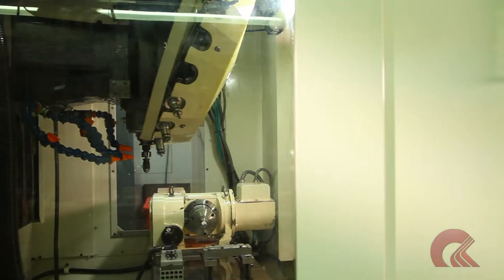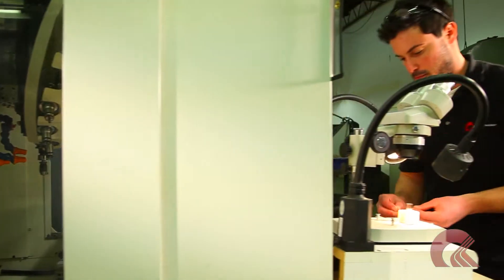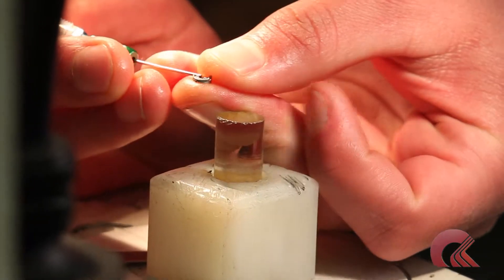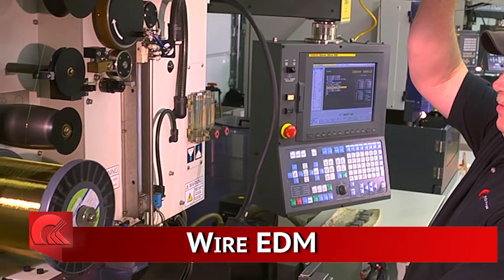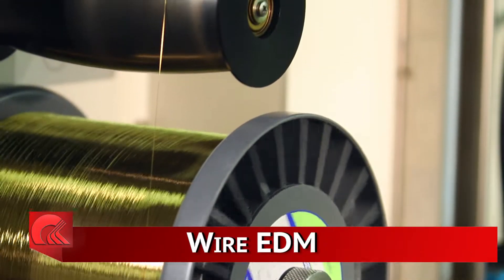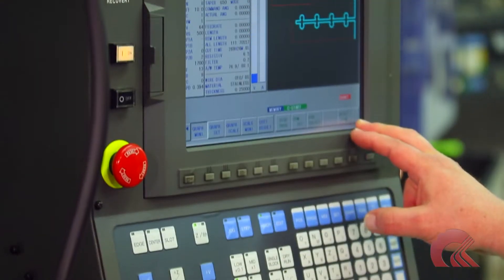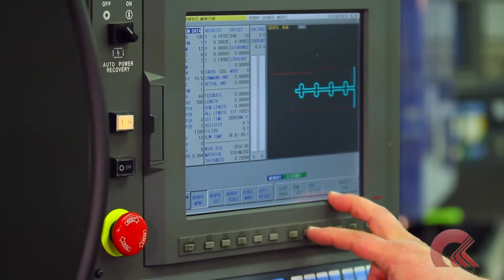Computer-controlled machining ensures consistency on every part, no matter how complex. Wire EDM machines, using wire as small as 2-1000ths of an inch, allow us to create the most complicated component geometries in electrically conductive materials, no matter how exotic.